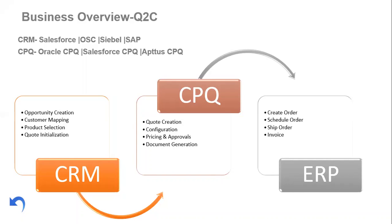First, a brief overview: Oracle CPQ is a cloud-based product — it's Software as a Service. You don't need any installation, database server, or anything like that. You just need an internet connection and a web browser to start using the Oracle CPQ system. However, as it's a cloud SaaS product, it's a licensed product — you have to buy licenses from Oracle, then you'll get the product to use.